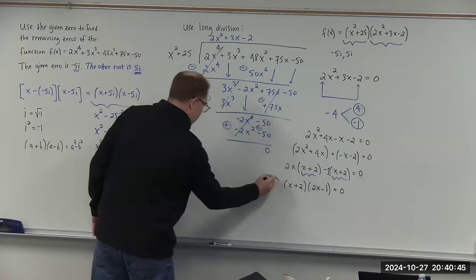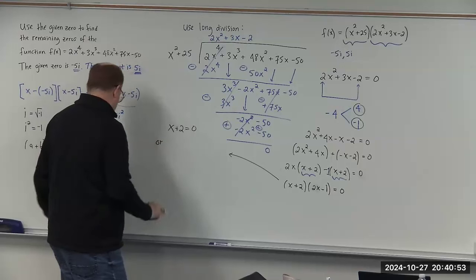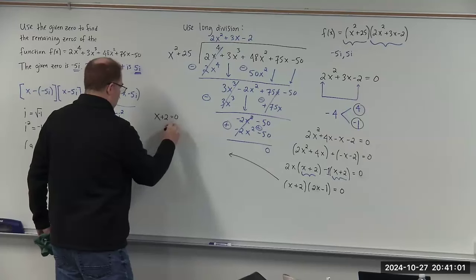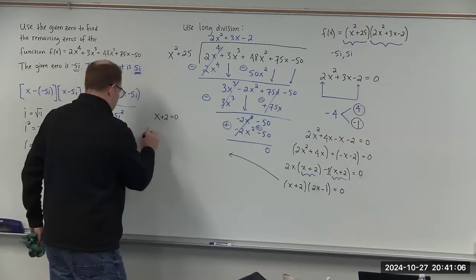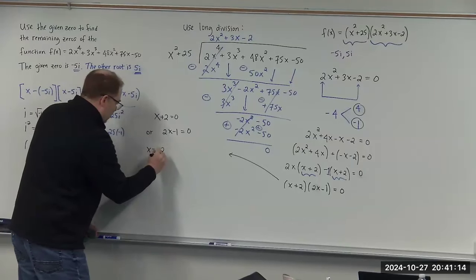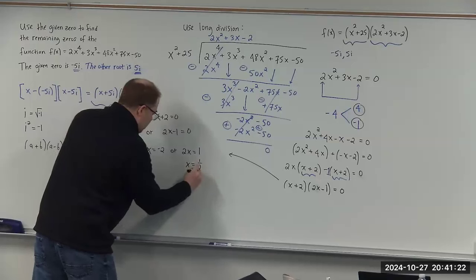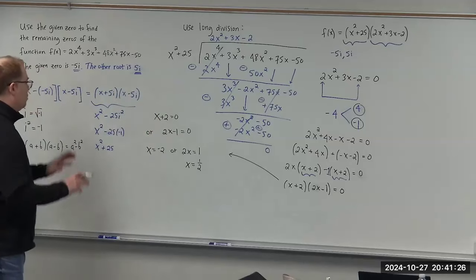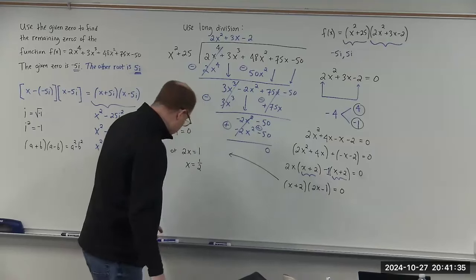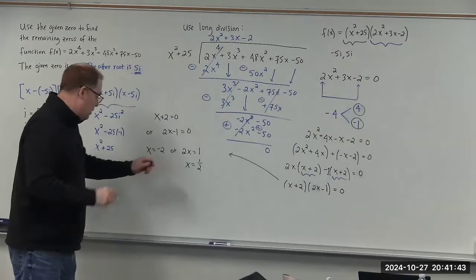We set each factor equal to zero. From x plus 2 equals zero, we get x equals negative 2. From 2x minus 1 equals zero, we get 2x equals 1, so x equals one half.